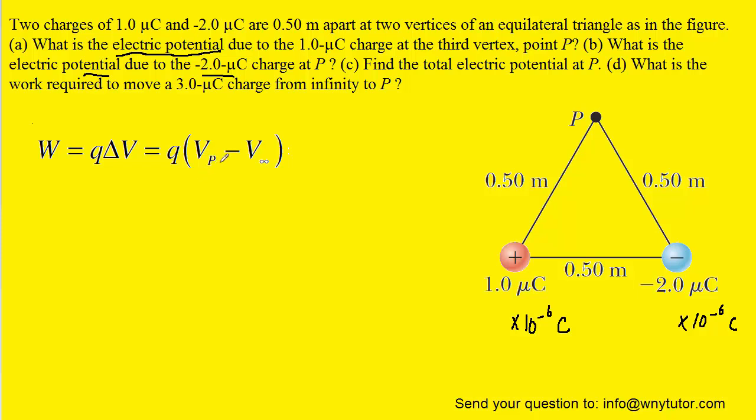Notice that the final potential would be the potential at point P because that's the final location of the charge. And then the initial potential would be the potential at infinity. Now the potential at infinity is considered to be 0. So this term V sub infinity is actually just going to disappear in the equation.